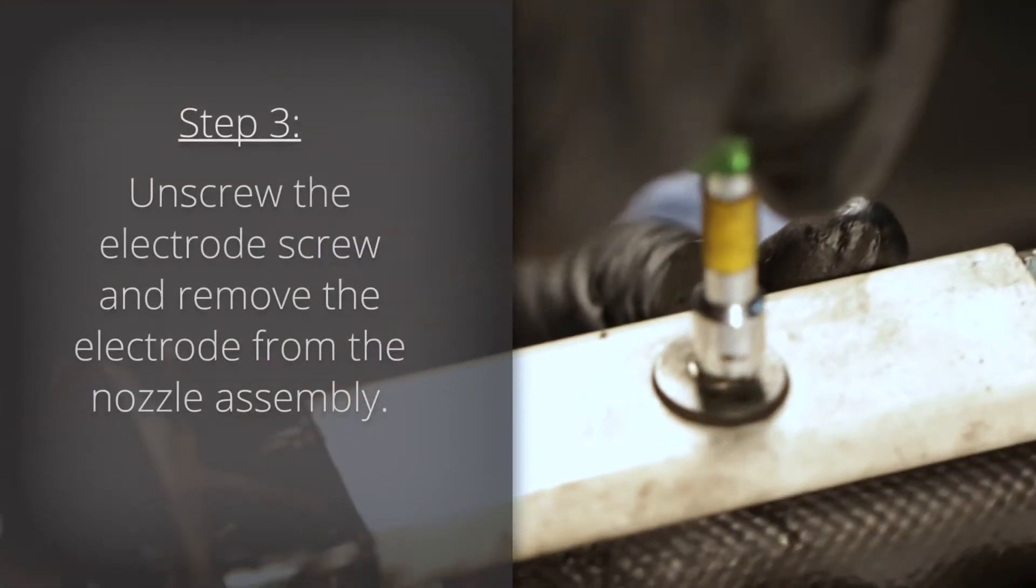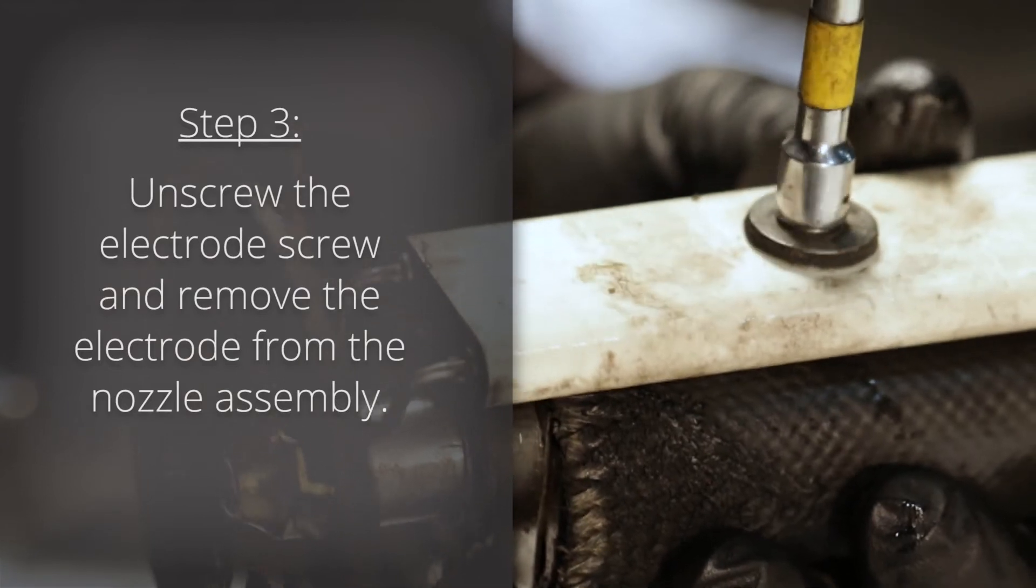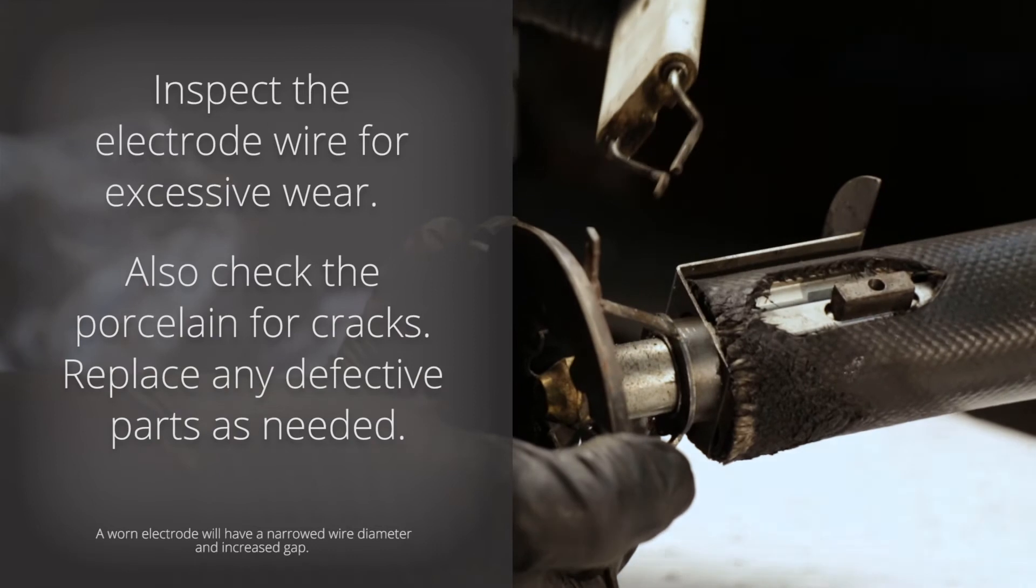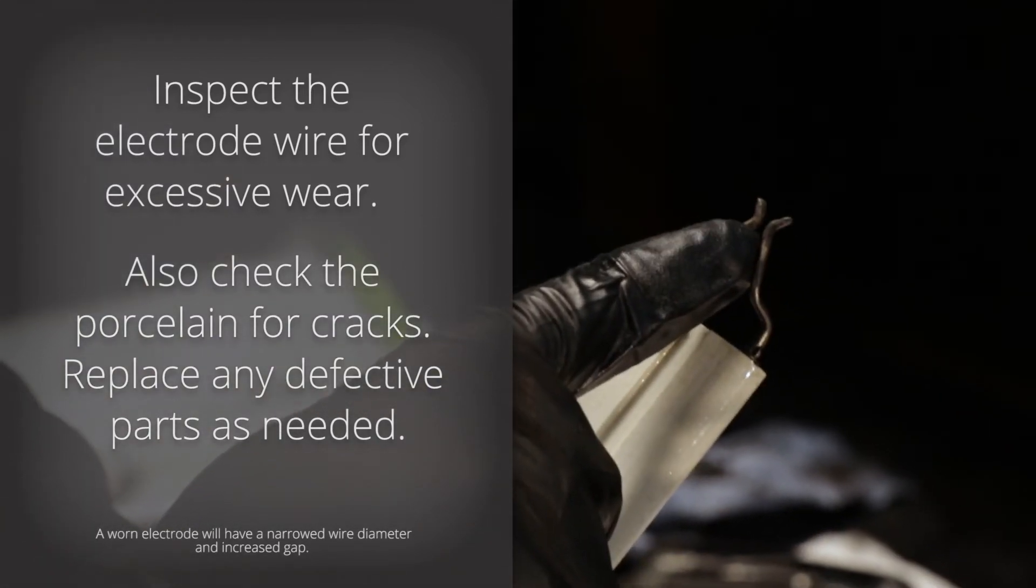Step 3. Unscrew the electrode screw and remove the electrode from the nozzle assembly. Inspect the electrode wire for excessive wear. Also check the porcelain for cracks. Replace any defective parts as needed.